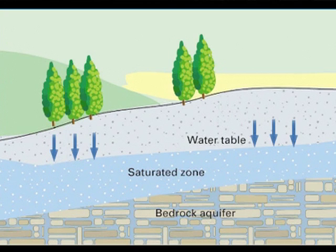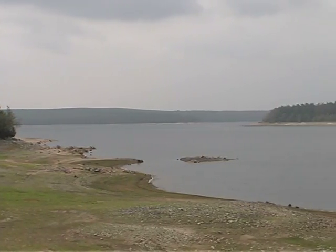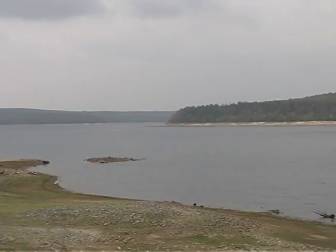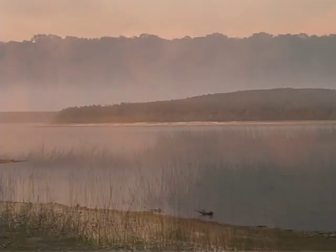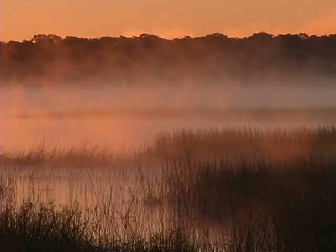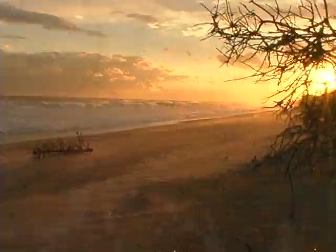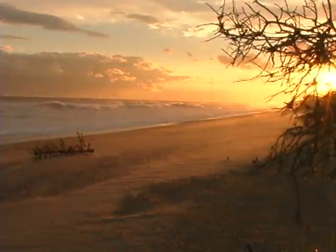Groundwater is part of the movement of water through a watershed. Very simply, a watershed is the land area that contributes water to a particular water body, whether that water body be a wetland, a lake, a pond, a river, Narragansett Bay, or even the Atlantic Ocean.